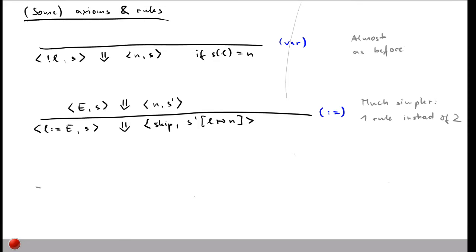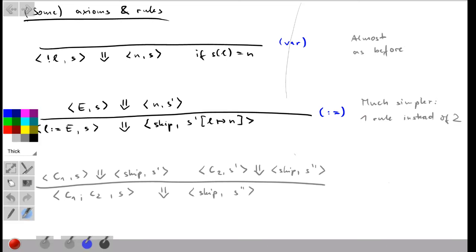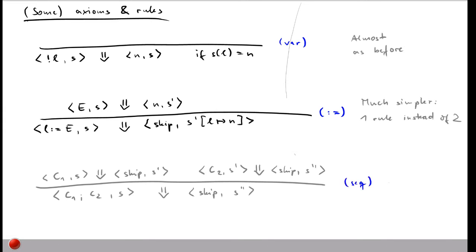As a third example, let's look at the rule that allows us to evaluate a sequence of commands. If you have a sequence c1 semicolon c2 and want to evaluate this given some initial store s, then all of this can be evaluated in just a single step to skip with a new store s double prime, under two conditions: first, that if we start with c1 given store s it evaluates to skip and a store s prime; and after that, we take c2 given s prime and this evaluates to skip with a changed store s double prime. This allows us to do something in a single step that required multiple steps in small step semantics.